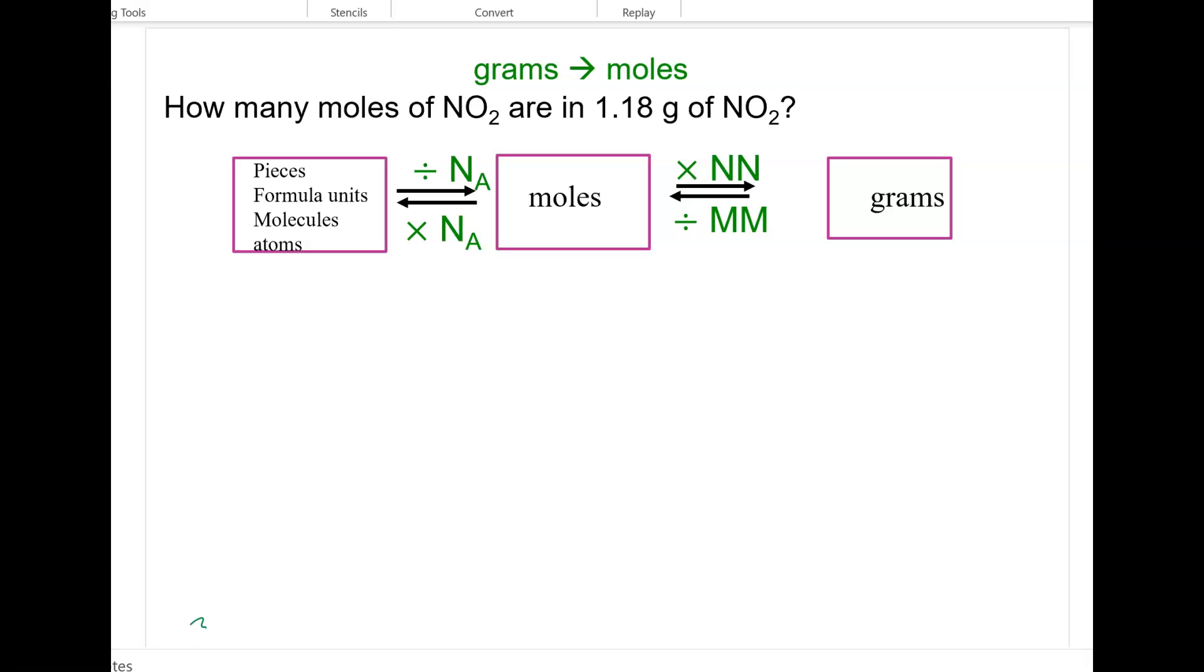Let's look at this problem. How many moles of NO2 nitrogen dioxide are in 1.18 grams of nitrogen dioxide? So we have grams, and we want moles. So we are going from grams to moles.